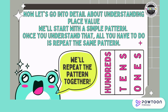Now let's go into detail about understanding place value. We'll start with a simple pattern — once you understand it, all you have to do is repeat the same pattern. Start at the right side: ones, tens, hundreds. Let's say it again: ones, tens, hundreds. One more time: ones, tens, hundreds.